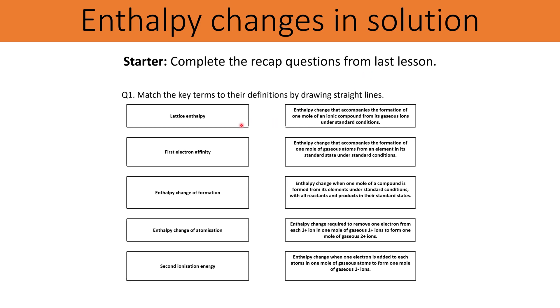What we need to do is match the key term to its definition, so we'll begin with lattice enthalpy. For lattice enthalpy we should have got the enthalpy change that accompanies the formation of one mole of an ionic compound from its gaseous ions under standard conditions.